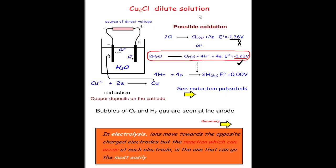Now consider a dilute solution of copper chloride — unlike the molten version, water is also present. At the cathode (reduction side), copper ions gain two electrons to form copper — that's the only possible reduction here. On the anode side there are two possible oxidations: chloride ions forming chlorine gas plus two electrons, with a reduction potential of 1.36 volts; or water going to oxygen, releasing four hydrogen ions and four electrons, with a reduction potential of minus 1.23 volts.